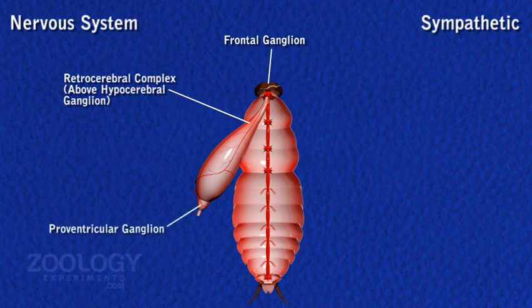The retrocerebral complex is located above the hypocerebral ganglion. It is formed of two paired masses: the corpora cardiaca and corpora allata, and related connectives. Corpora cardiaca is neurosecretory and regulates the heartbeats and peristalsis of the fore-gut. Corpora allata produces hormones which assist in reproduction and metamorphosis.